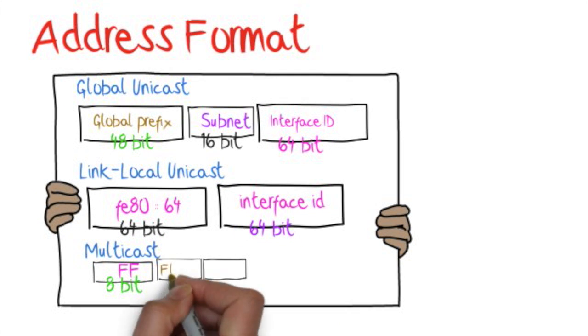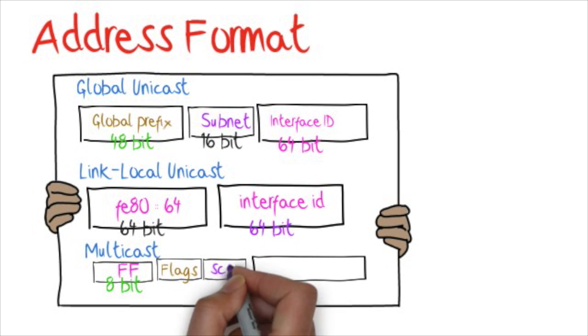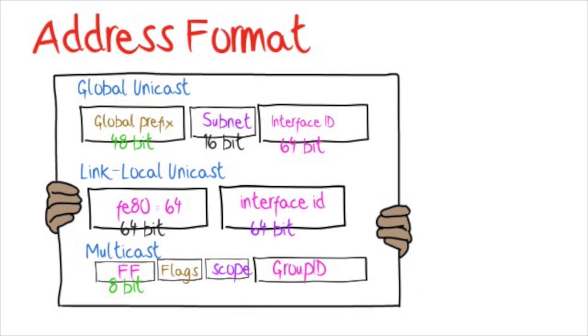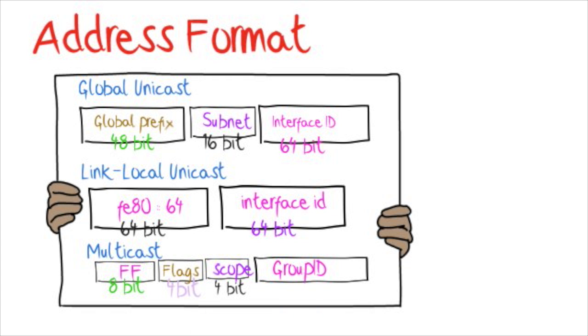Multicast address having 8-bit FF value, 4-bit flags, 4-bit scope, and group ID of 112-bit.